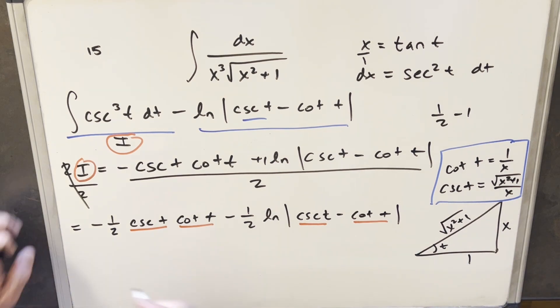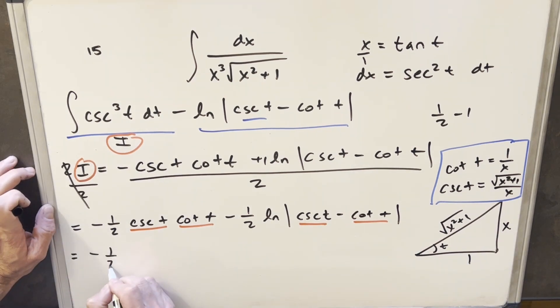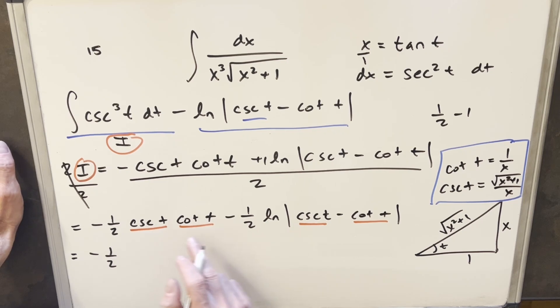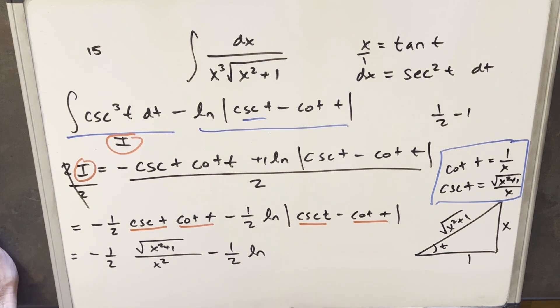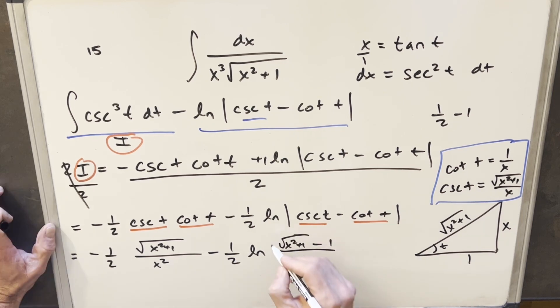So let's just start plugging in. So we're going to have minus 1 half cosecant times cotangent. That's this times this. It's going to be square root of x squared plus 1 over, multiplying the denominators is going to give me x squared minus 1 half natural log. Now for these, we have the same denominator. They're both x. So I can write it all over x. And then we're going to have just the square root of x squared plus 1 minus just a 1. We'll put an absolute value around that plus c. And that's it.